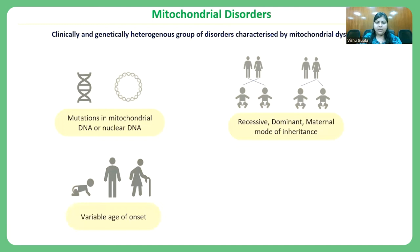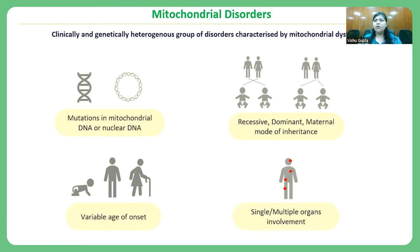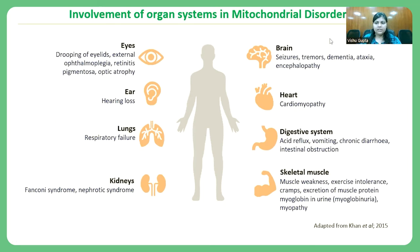The age of onset in mitochondrial disorders is variable — occurring in both pediatric and adult populations. Another source of heterogeneity is that mitochondrial disorders can involve a single organ or multiple organs. The organ systems involved range from eyes, ears, lungs, kidneys, digestive system, brain, heart, and skeletal muscle, to liver and speech. Mostly, high-energy-demanding tissues like the brain, heart, and skeletal muscle manifest the symptoms of mitochondrial disorders, as these tissues require proper mitochondrial function to perform their tasks.